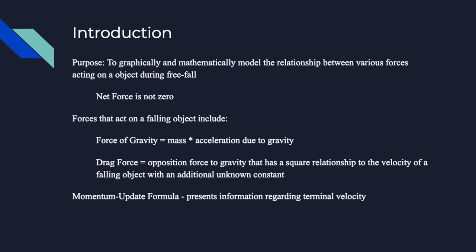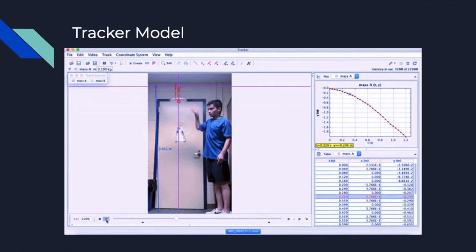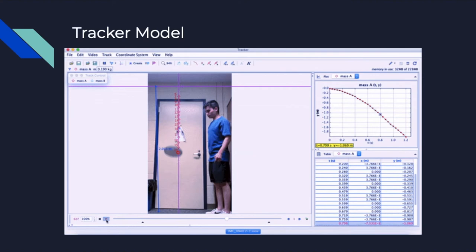And this is where the momentum update formula can help us by determining a final velocity. Here's a tracker model. I dropped a paper plate in this instance, which accrues a lot of air resistance, as you'll eventually tell in the graphs.